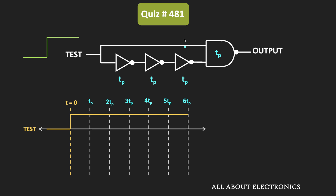This stage signal is one of the inputs to the NAND gate. Let's say the second input to the NAND gate is equal to x. This stage signal passes through the three NOT gates, which means the second input x is equal to test bar — the invert of the stage signal. Whenever the stage signal is low, x will be high, and when the test signal is high, x will become low. But due to propagation delay, this x input will change after three gate delays, that is 3tp.